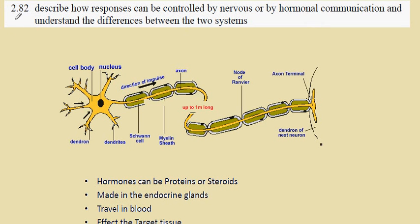IGCSE Biology Syllabus Statement 2.82. Here we're describing how responses can be controlled by nerves or by hormonal control.